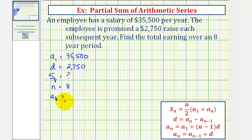So we'll begin by determining a sub eight, and then find the partial sum s sub eight. Notice how there are two formulas for a sub n, but this last formula requires us to have a sub n minus one, or in this case a sub seven, which we don't have. So we'll use this formula here to find a sub eight.